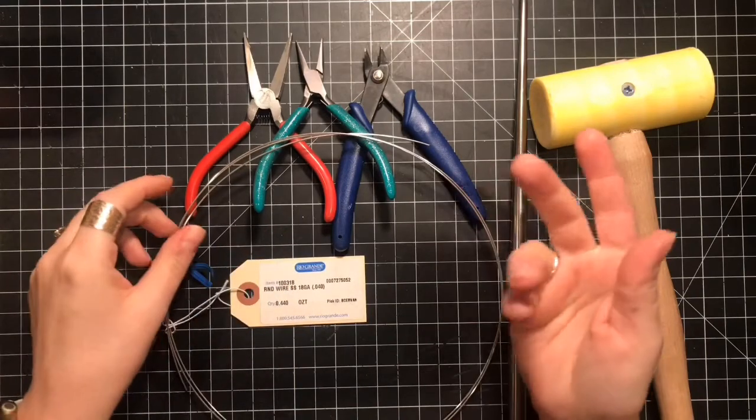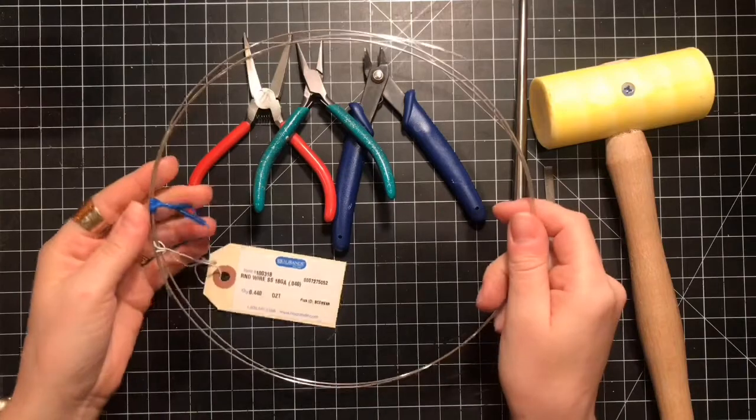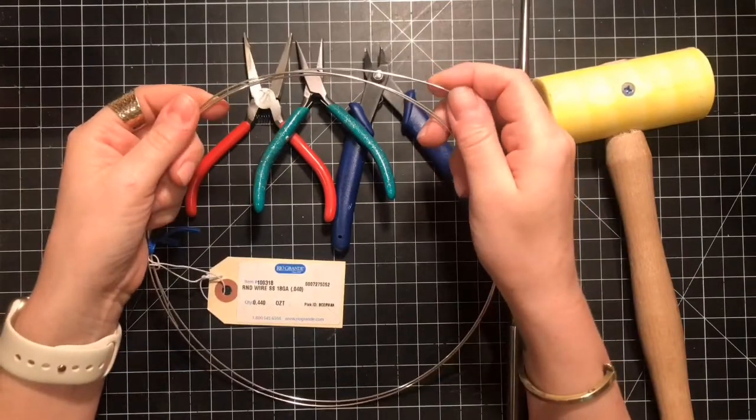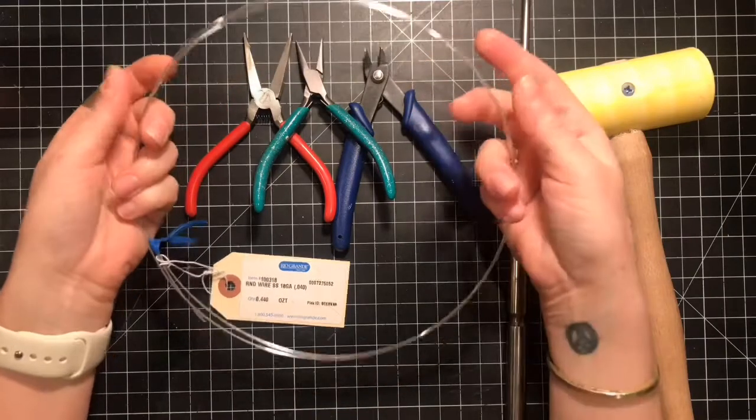This can be used for your tragus, the rook, the conch, any type of piercing you have in your cartilage that is larger than a standard earring.